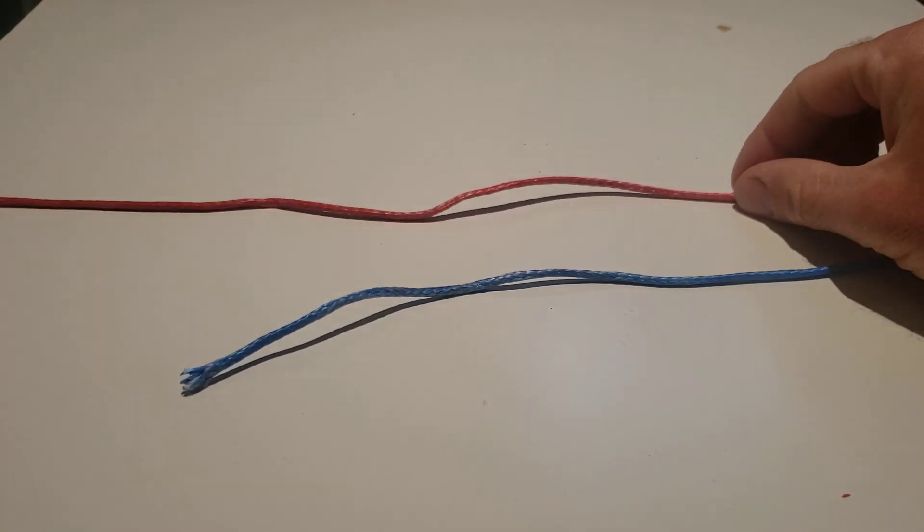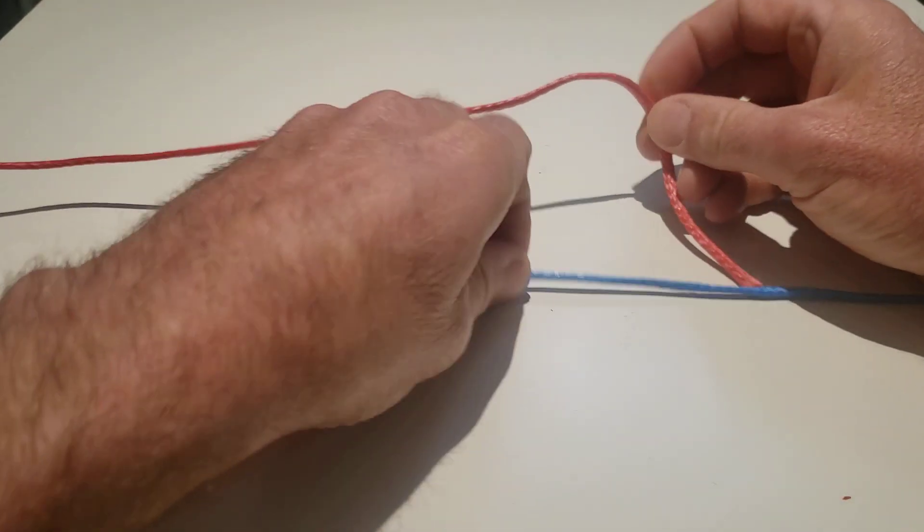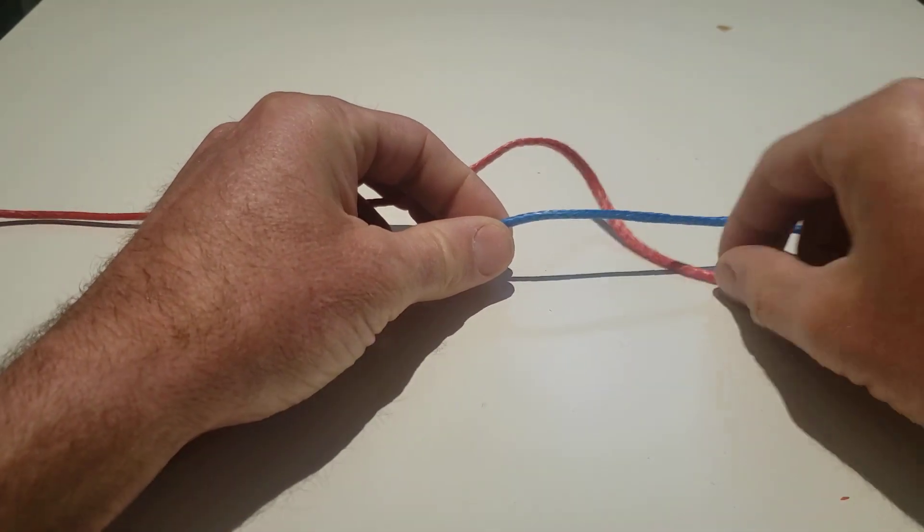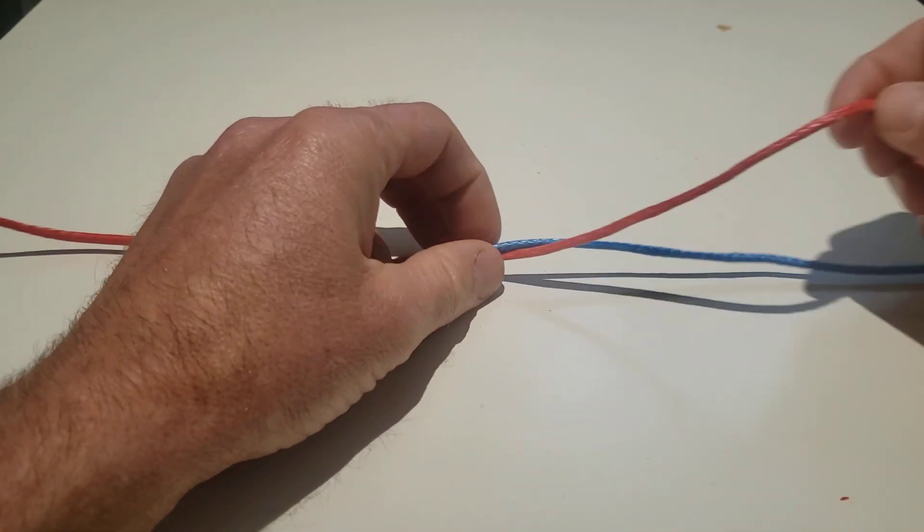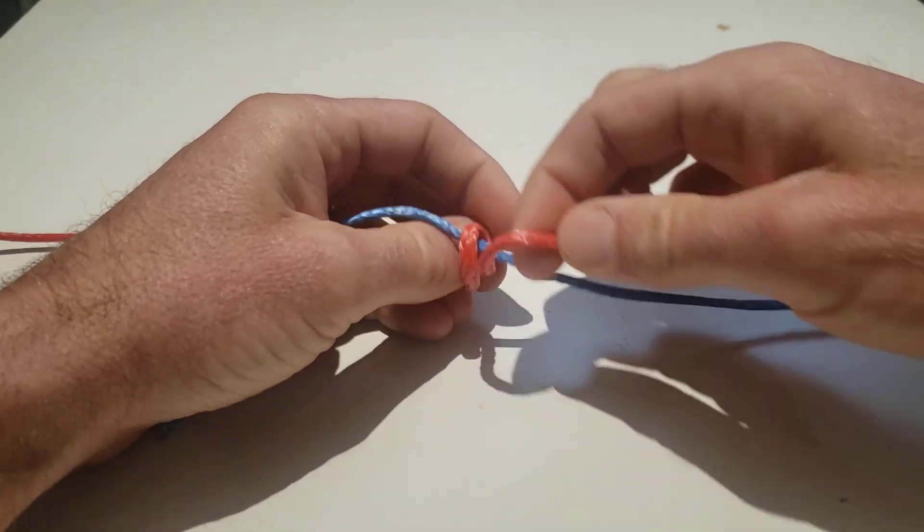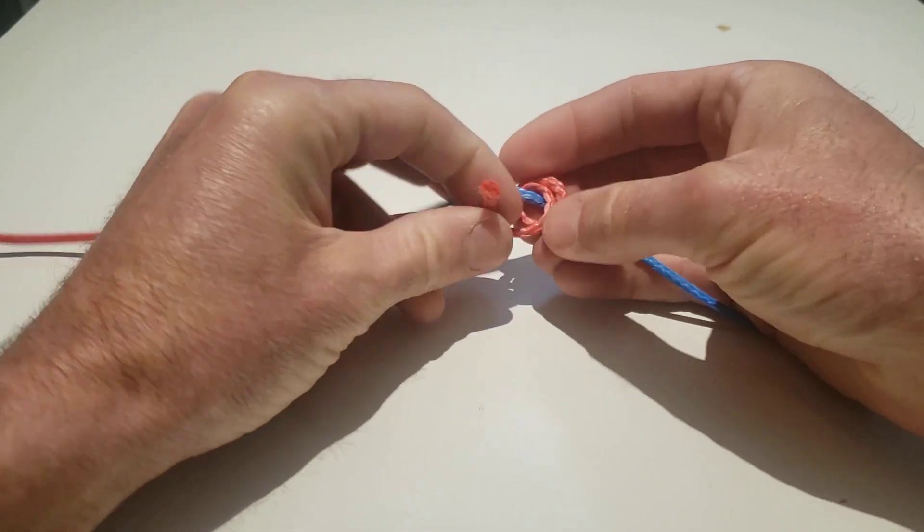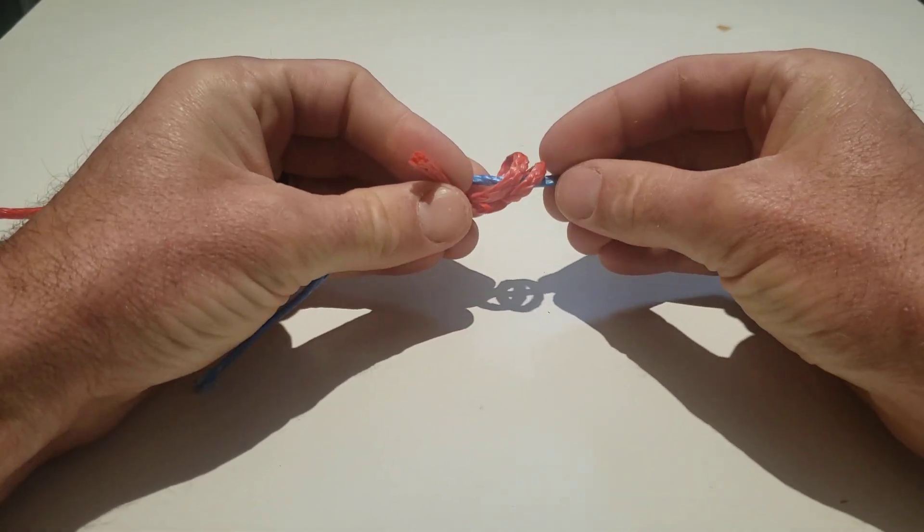So I'm going to take the red line and loop it underneath and around the blue line so there's two loops on top. There's one, there's two. I'm going to bring it up and over. See those two loops there?